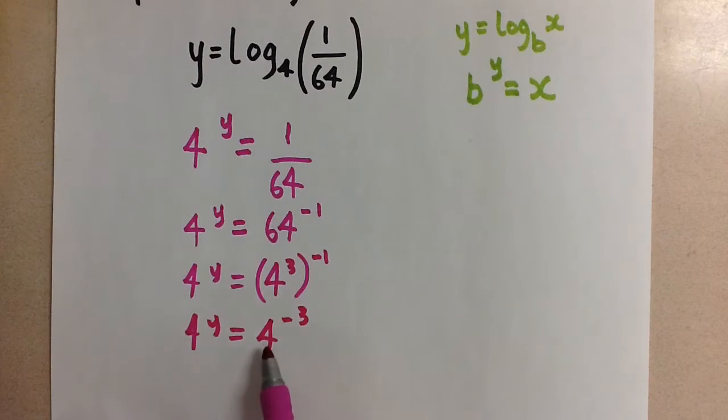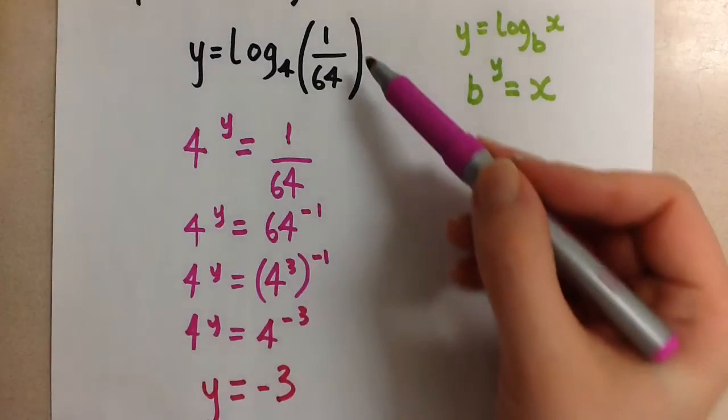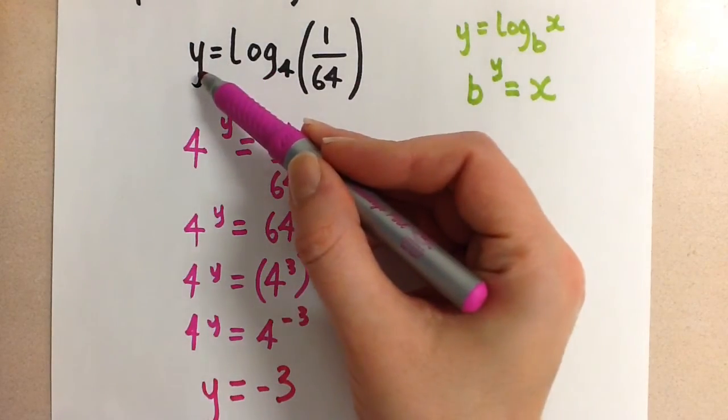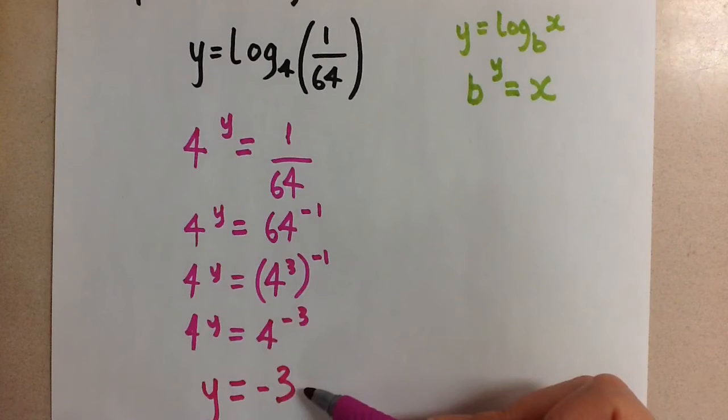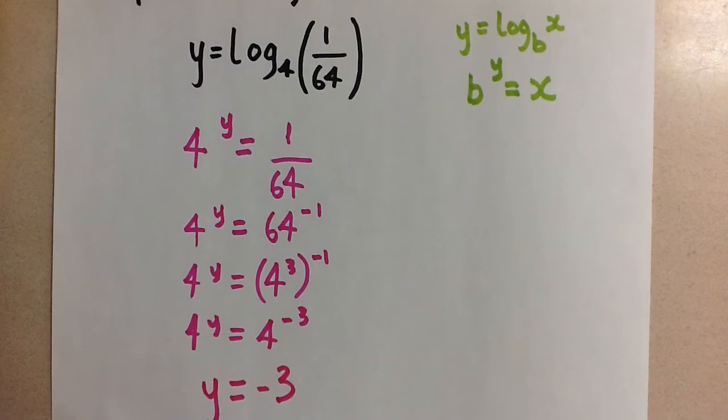And so you can see, because our bases are both 4, we can equate the exponents. And y is going to be equal to negative 3. So the value of the logarithm up here is y, and it is equal to negative 3 using the exponential form.